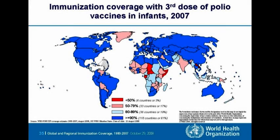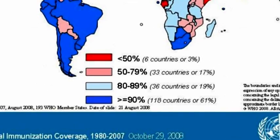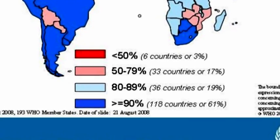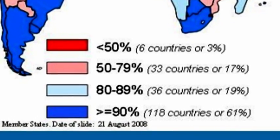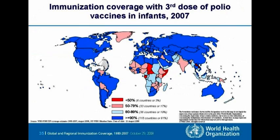This then became the weakest link in the body, so that when a child was exposed to polio, he or she died or was paralysed.